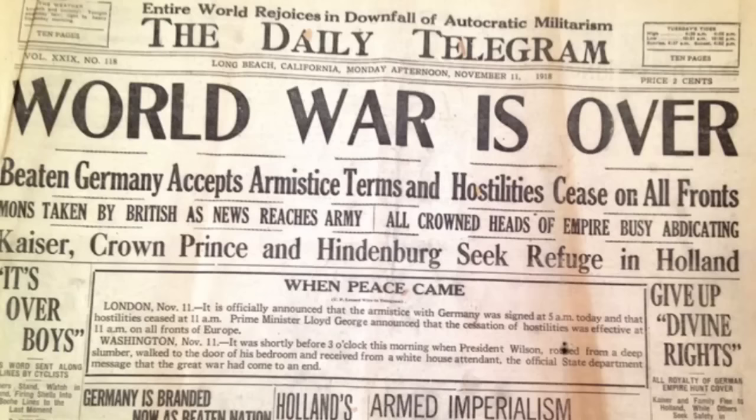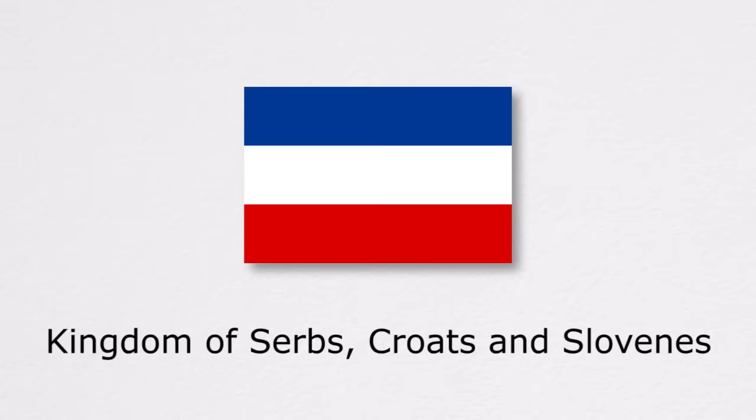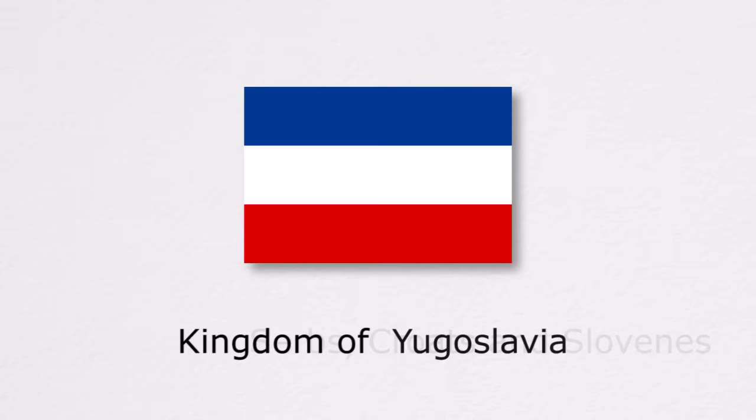For this, we need to go back to 1918 and the end of World War 1. Yugoslavia was created from the Kingdom of Serbia, the Kingdom of Montenegro, and what used to be territories of the Austro-Hungarian Empire. The country was originally called the Kingdom of Serbs, Croats and Slovenes, but later changed its name to the Kingdom of Yugoslavia.